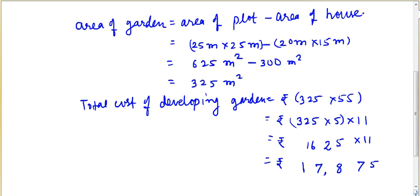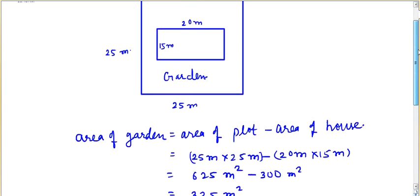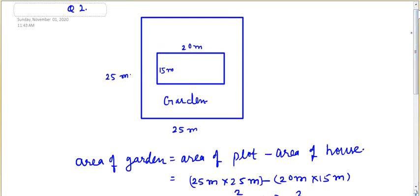The answer is 17,875 rupees. The question is very easy and very important from an exam point of view. To find the cost of the garden, first find the area of the garden: find the area of the outer square, subtract the area of the inner house, then multiply by the given cost per square metre. I hope you understood the questions. Solve the remaining questions. In the next video, I will show how to solve the remaining questions of exercise 11.1. Have a good day.